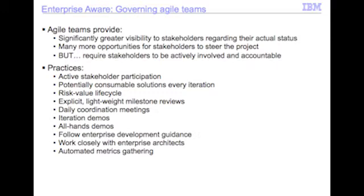We also provide more opportunities for stakeholders to be actively involved and to steer the project. There are practices baked right into agile — things like active stakeholder participation, producing a potentially consumable solution every iteration. In Scrum they talk about having potentially shippable software, but in Disciplined Agile Delivery, because we're enterprise aware and looking at the bigger picture, we realize that yes, we're working on software, but that software runs on hardware, we are producing supporting documentation, we're often changing the business process around the usage of the solution, and sometimes even changing the organization structure. So we need to be talking about solutions and not just software. There are also iteration demos, all-hands demos, automated metrics gathering, and automated project dashboards — a bunch of practices common in the agile community that make it a lot easier to govern the agile team.